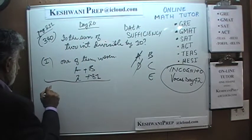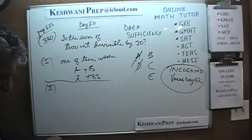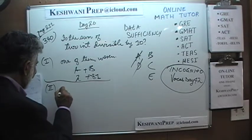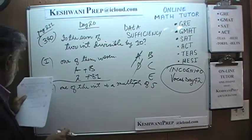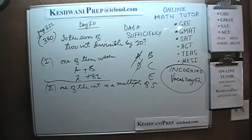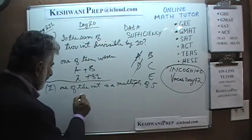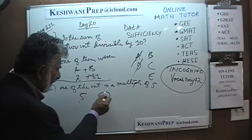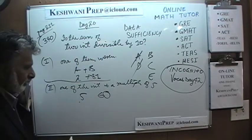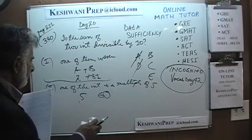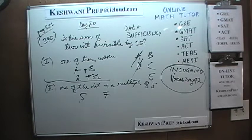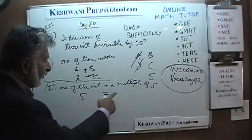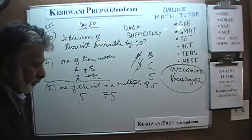Statement 2 says one of the integers is a multiple of 5. Simply knowing that one is a multiple of 5, we cannot tell if the sum is divisible by 10. Maybe one is 5 and the other is 6 — not divisible by 10. Or maybe one is 5 and the other is 75 — in which case the sum is divisible by 10. You get the idea. It's not enough.